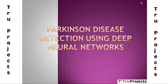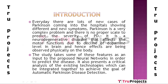In this video, we are going to discuss the project titled Parkinson's Disease Detection Using Deep Neural Networks. Parkinson's is a very complex problem and there is no proper scale to predict the severity of the disease. It is a neurodegenerative disorder that affects motor function due to the decline of dopamine levels in the brain, and hence effects are observed physically on the body. Every day, there are many new cases of Parkinson's coming into hospitals showing different and new symptoms. The proposed system uses a neural network to predict the disease.